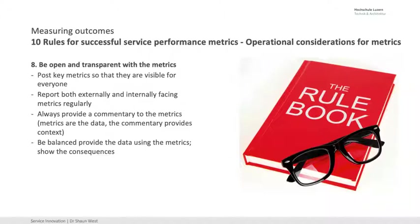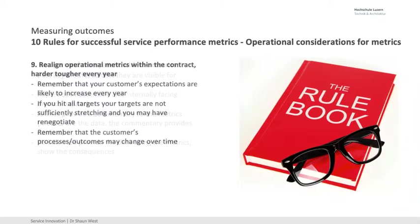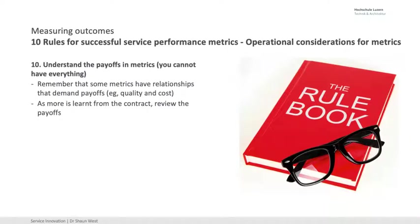Be open and transparent — share them. Go to the customer and say, 'Look, we're doing a bad job here and I don't understand why,' or 'We're delivering but something's going wrong.' Realign the metrics with the contract. Make it a little bit harder every year — what was okay in year one might not be okay in year ten once we know the plant well. Some metrics have payoffs; they work in opposite directions. Understand which metrics work together and which ones create a multiplier effect.